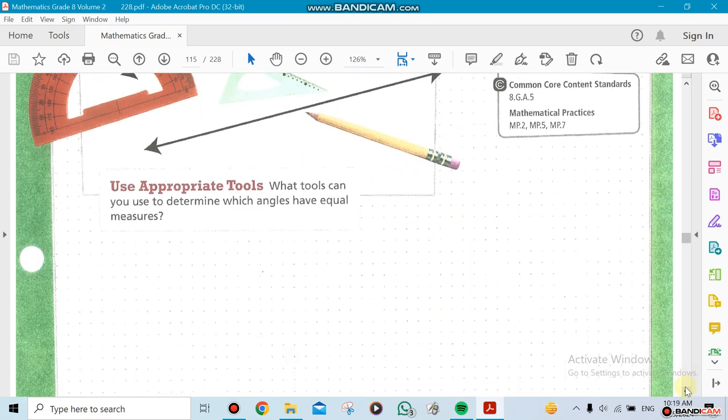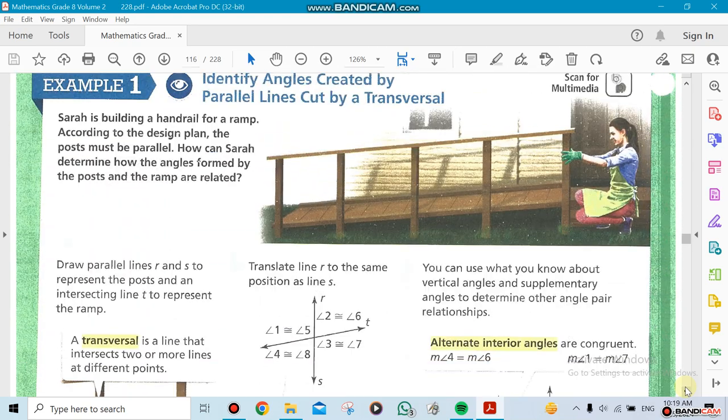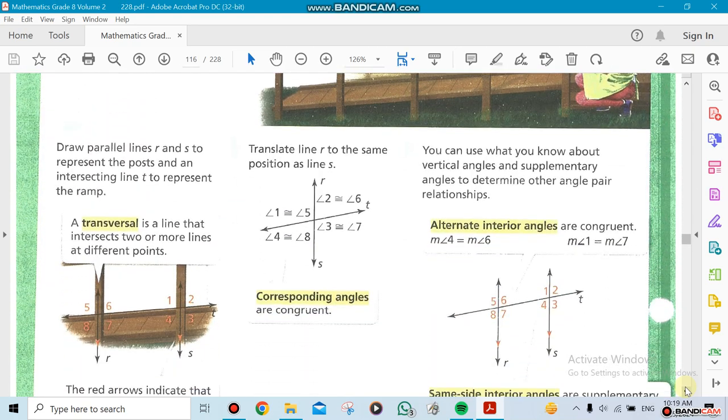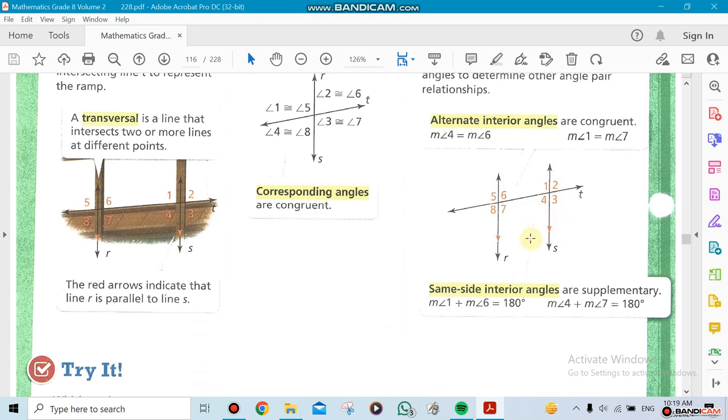You can see this one here, for example. You look at those two lines here, line R, line S. You have a line that cuts them, and T here is a transversal line. That's the definition of it. It's a line that intersects two or more lines at different points. This line is a transversal line because it cuts two or more.